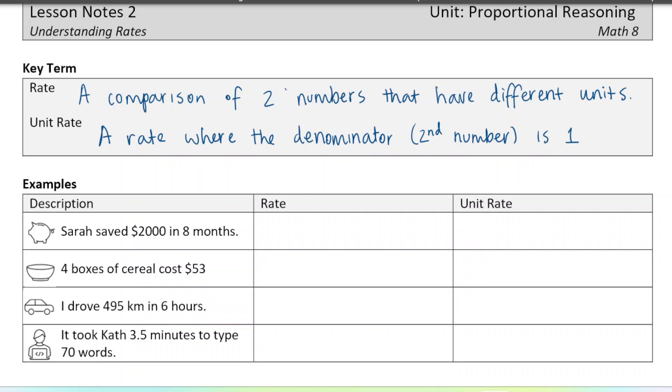Okay, so I have four examples here. First one says Sarah saved two thousand dollars in eight months. So we're gonna write that just as a fraction and that's our rate. So it's two thousand dollars for every eight months.